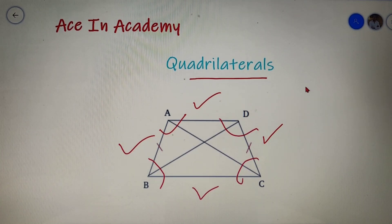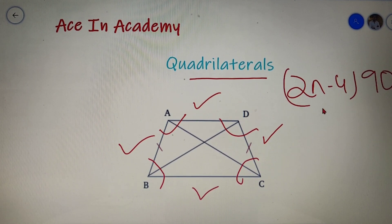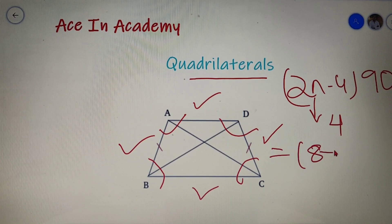Now since it is a polygon, the sum of angles of a polygon has a formula of 2N minus 4 into 90. On putting N equal to 4 we will get 8 minus 4 into 90.